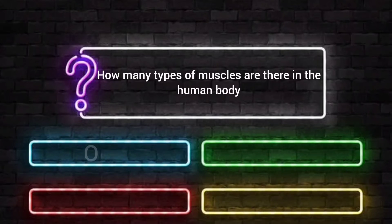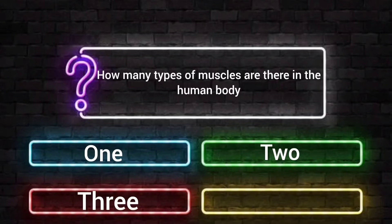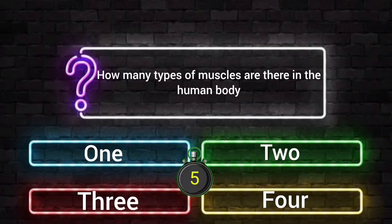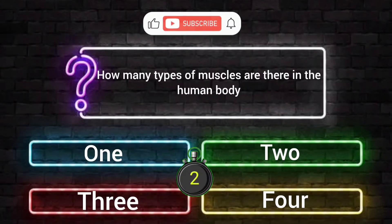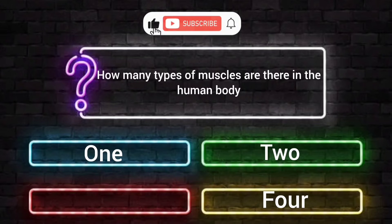How many types of muscles are there in the human body? Option A: 1. Option B: 2. Option C: 3. Option D: 4. Your time starts now. The answer is Option C, 3.